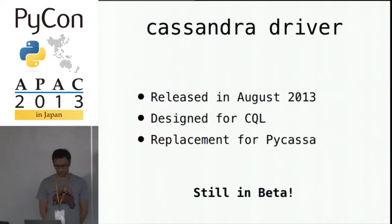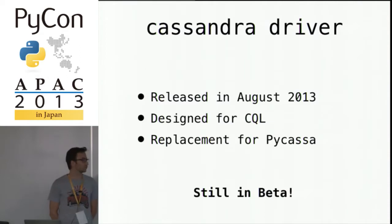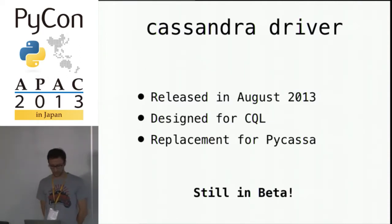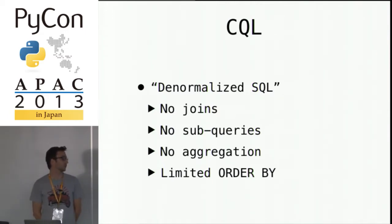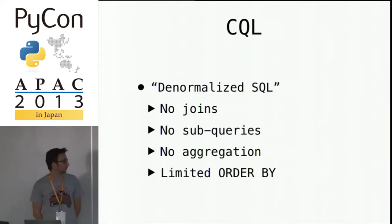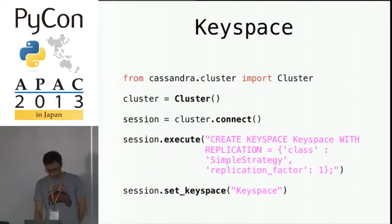The Cassandra driver was released in August 2013. It's designed for the CQL language and is supposed to be a replacement for Pycassa in the future, though it's still in beta — around 1.0 beta 2 or RC2. So what's CQL? It's a kind of denormalized SQL. You have some SQL features, and features you don't have in SQL you can handle with tools like Hadoop or Storm. There are no joins, no subqueries, no aggregation, and limited ORDER BY — but it's still very useful.